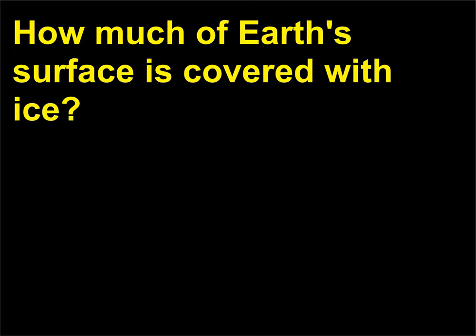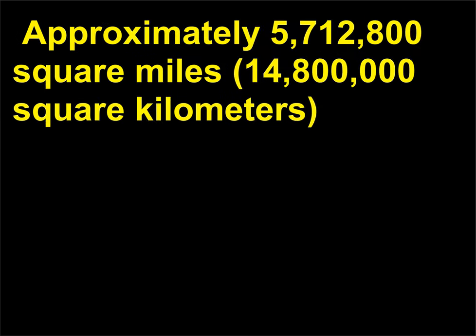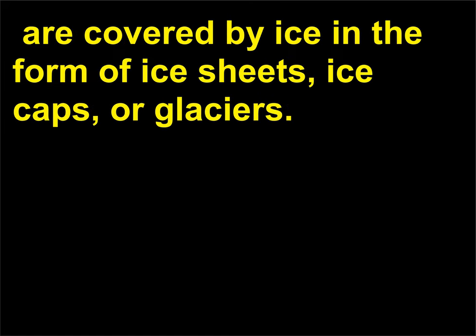How much of Earth's surface is covered with ice? About 10% of the world's land surface is glaciated, or permanently covered with ice — approximately 5,712,800 square miles (14,800,000 square kilometers). Glaciers are covered by ice in the form of ice sheets, ice caps, or glaciers.